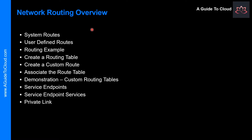Let's have a look at what we are going to learn in this video. We will start with System Routes and User Defined Routes and learn about a few routing examples. I will take you through how to create a routing table, how to create a custom route, and then associate the route table. I will take you back to the Azure portal to show you. And then we will talk about the Service Endpoint and Service Endpoint Services, and we will finish off with the Private Link.